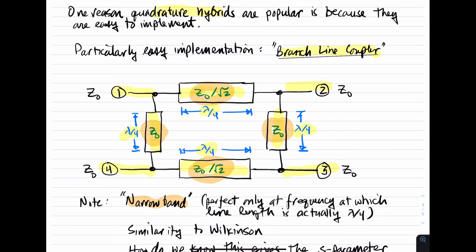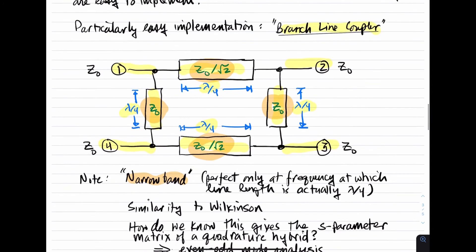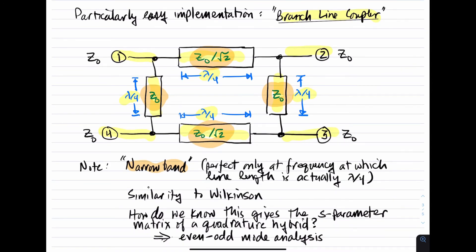Another thing to note here is the similarity to the Wilkinson divider combiner. The Wilkinson device also uses quarter-wave lengths of transmission line and similarly has this feature of having very, very high isolation between sets of adjacent ports.